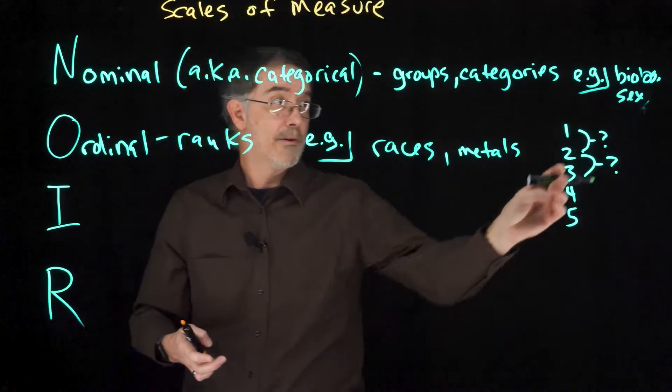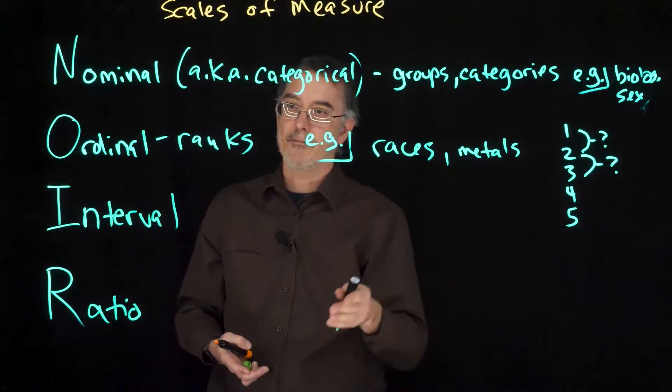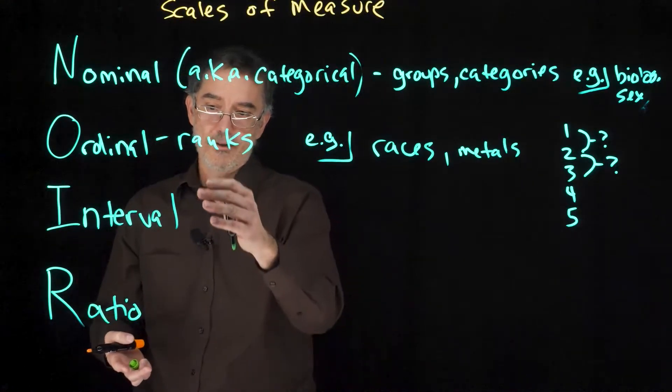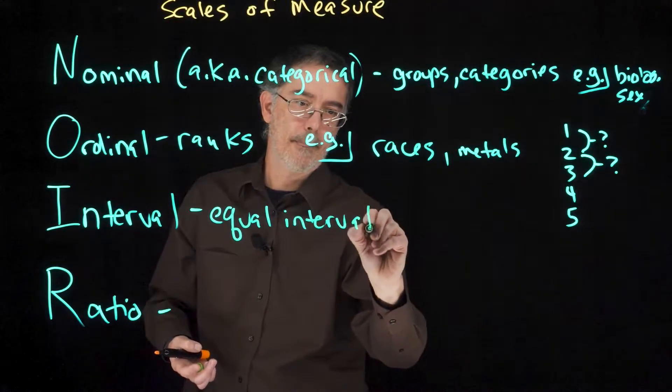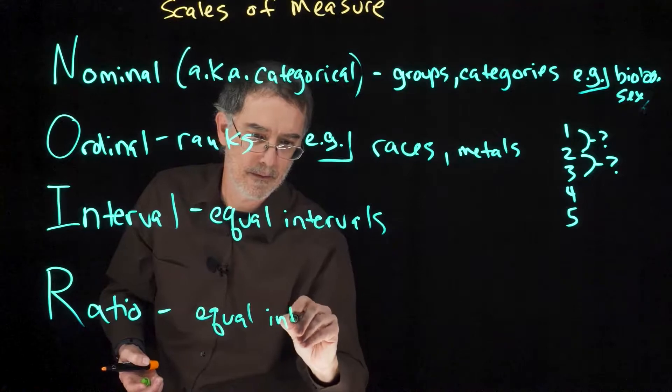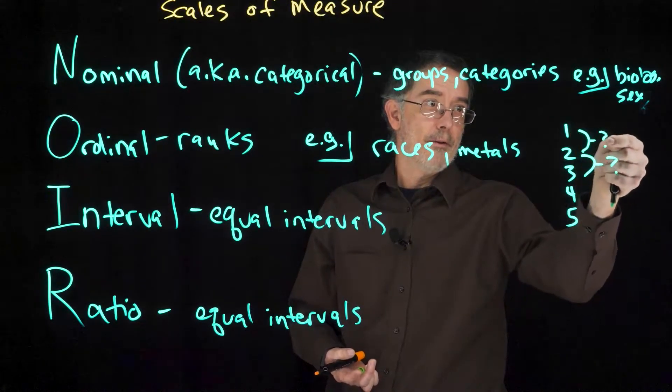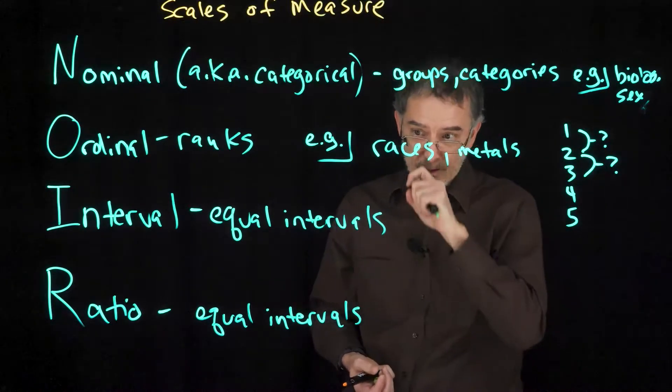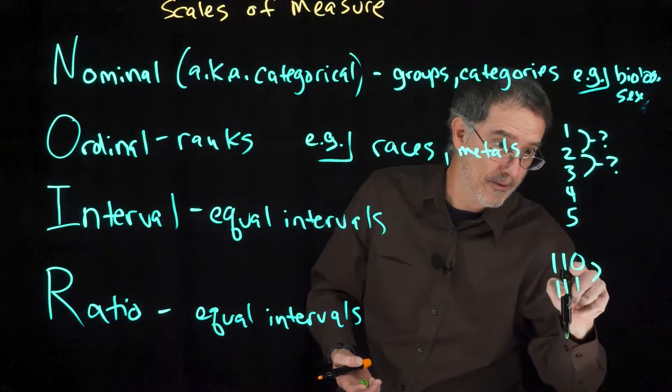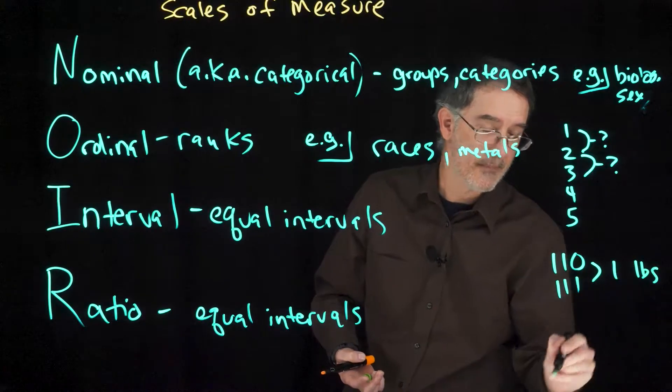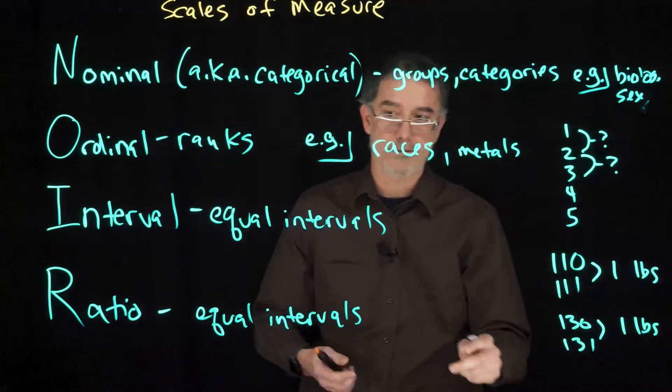Both interval and ratio do tell you these distances. Interval and ratio are the other two scales of measure, and these two are pretty similar to each other. In psychology, we treat them pretty much the same as each other. Both of these have equal intervals. What that means is the amount of whatever it is that you are measuring between 1 and 2, that amount is the same as between 2 and 3. If we are measuring pounds, and somebody is 110 pounds and somebody else is 111 pounds, the difference between those is 1 pound. If somebody is 130 and somebody else is 131, this difference is also 1 pound. That is what it means for equal intervals.